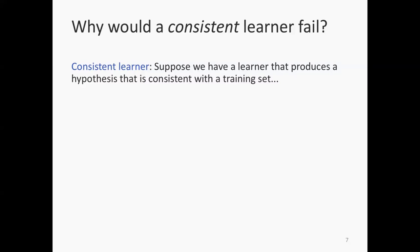ID3 is an example — it's a consistent learner. The training error of a tree that ID3 produces will be zero, because provided the data set does not contradict itself, ID3 will always produce a tree that is consistent. Another consistent learner is one that takes a training set, puts it in a database, and when a new example is presented, checks: is this example in my database? If so, return the true label; if not, just output a random label. That's also a consistent learner — though a consistent learner need not necessarily be a good one.